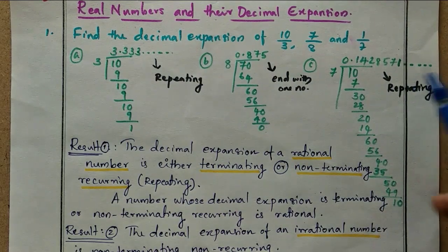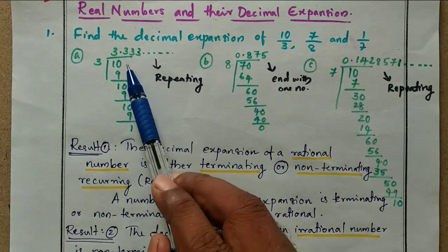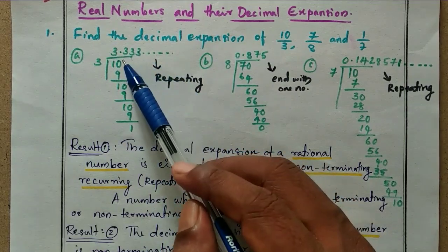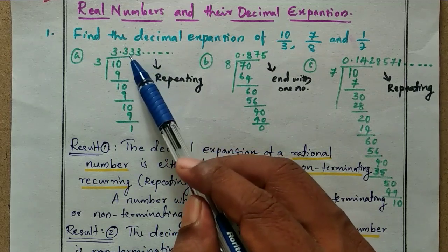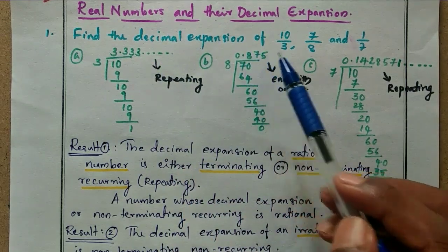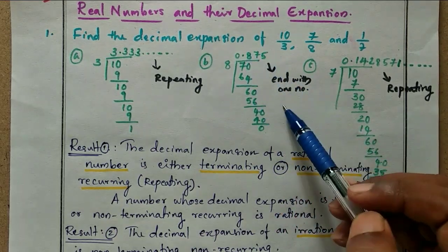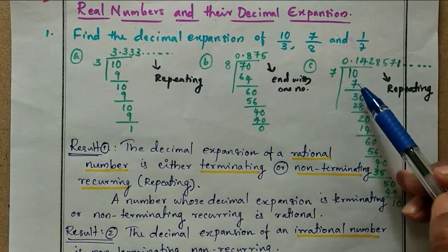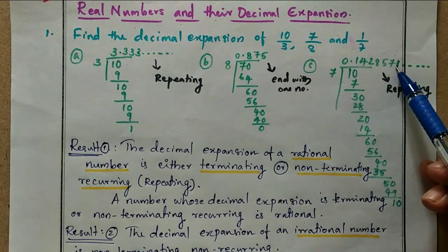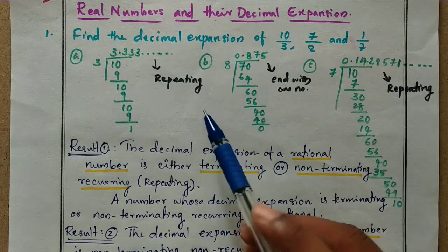We have some peculiarities in the decimal expansion of these rational numbers. The first one, 3.333..., has the number repeating after the decimal. The second one, 0.875, is finite — it ends with one number. And the third one, 0.142857..., is again repeating: 142857, then 1, then 42857 again, and so on.